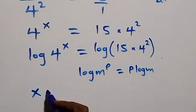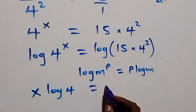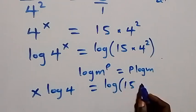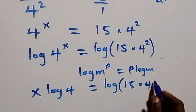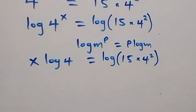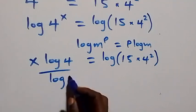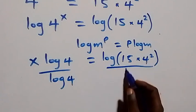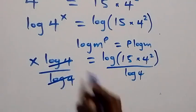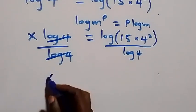Then here this becomes x log 4 equals to log of 15 times 4 squared on this side. That next step here we can divide both sides by log 4.